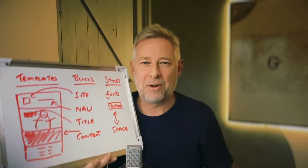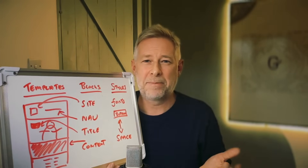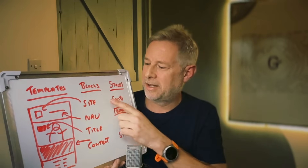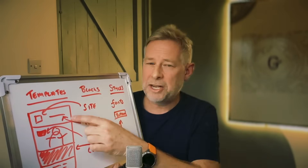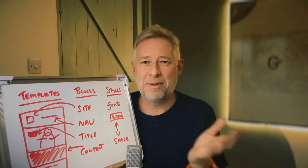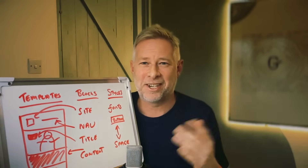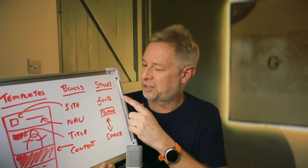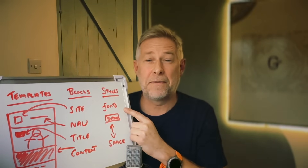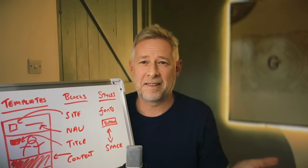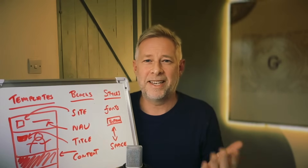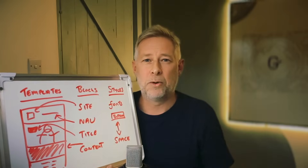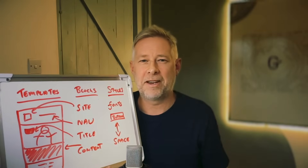Blocks are the building blocks of your templates. WordPress block themes include all the blocks you need to build your website — blocks like site title, navigation, page title, text, images, buttons, and more. Everything on your site from the header to the footer is made using blocks. Then we have styles. Styles encompass everything from fonts and colors to spacing and button designs. They give your site its unique look and feel, ensuring that despite the structured nature of templates, your website can still have a personalized and creative touch.